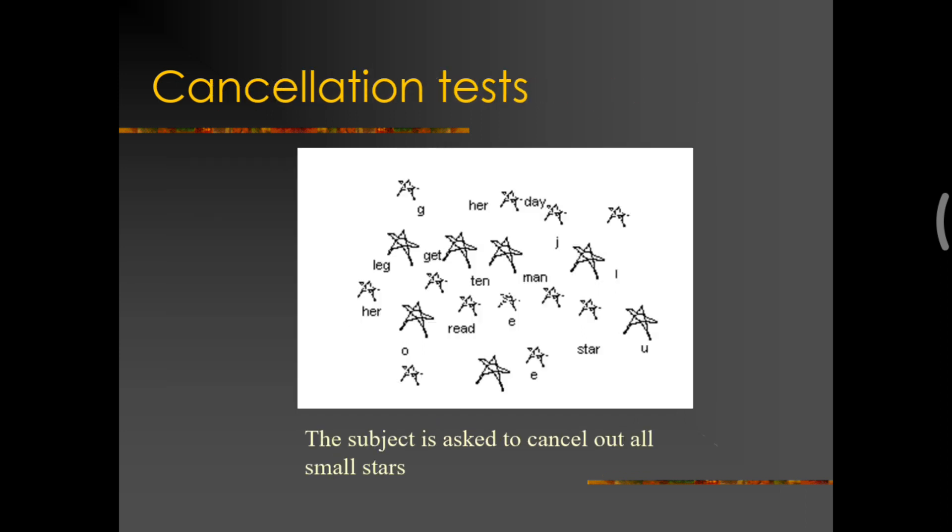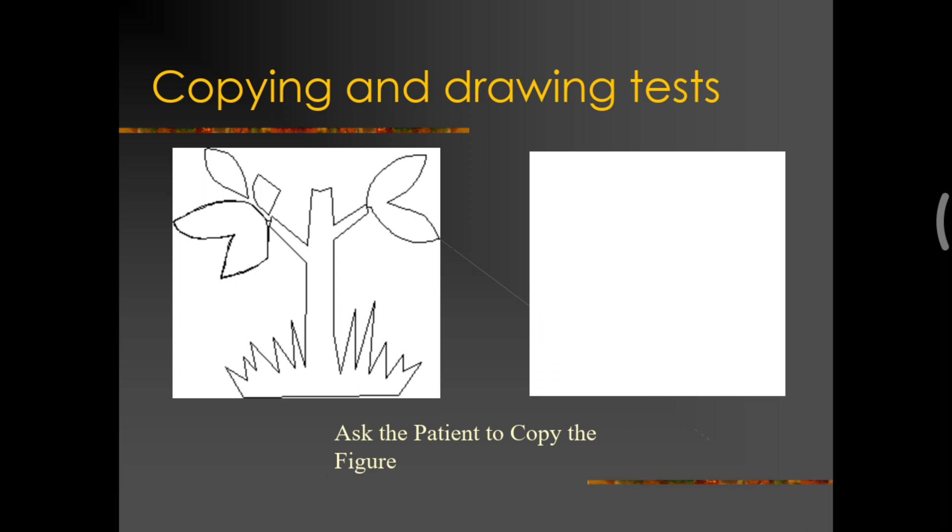The next is a copying and drawing test. In this, we give a picture. Previously, you saw a picture of a cat. In this, you see a picture which is slightly symmetrical. That means both the sides look similar slightly and we ask the person to copy and draw this and you know what would be the result of it. This is called as copying and drawing test.